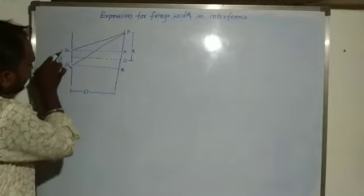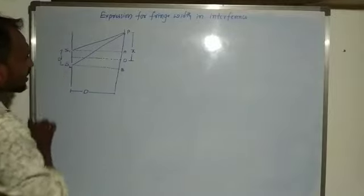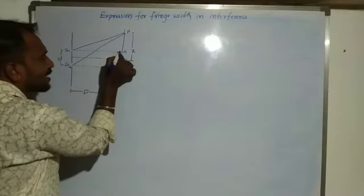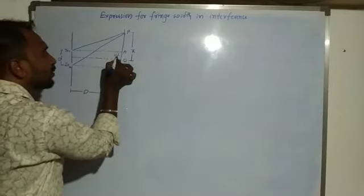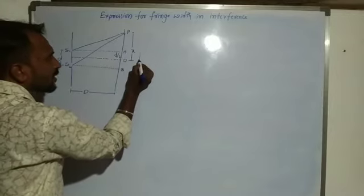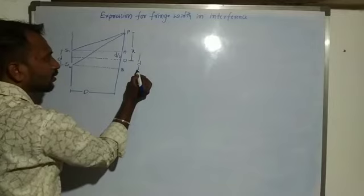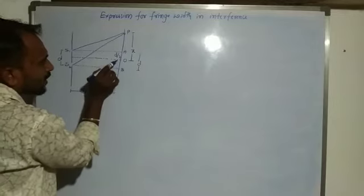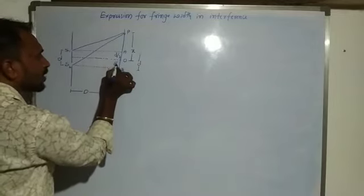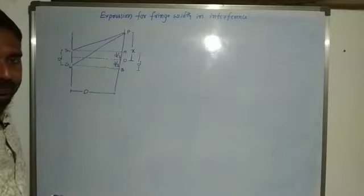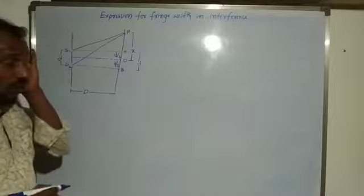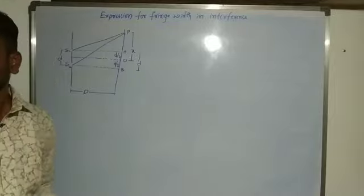The distance between the two slits is d. The distance from O to A is d/2, and O to B is also d/2, because A to B distance is small d.